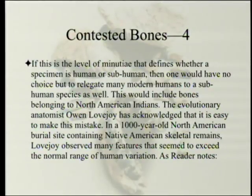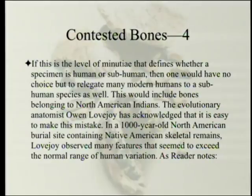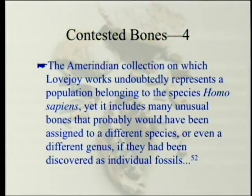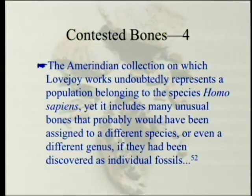This would include bones belonging to North American Indians. The evolutionary anatomist Owen Lovejoy acknowledged that in a 1,000-year-old North American burial site containing Native American skeletal remains, he observed many features that seem to exceed the normal range of human variation. As Reader notes, the Amerindian collection undoubtedly represents Homo sapiens, yet it includes many unusual bones that probably would have been assigned to different species or even a different genus if they had been discovered as individual fossils — or maybe if they had been discovered in Africa.